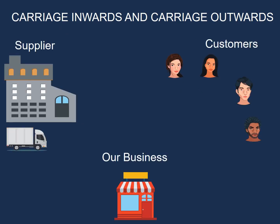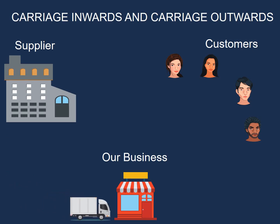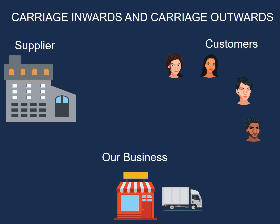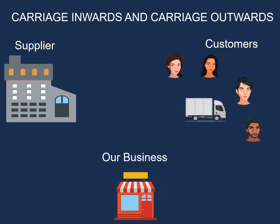We have our supplier, we have our business, and then we have our customers. When goods are being transported from our supplier to the business, that means goods are coming into our business, so this will be carriage inwards. But when we move goods from our business to our customers, the goods are going out of the business, so it will be carriage outwards. Carriage inwards can be linked to purchases and carriage outwards can be linked to sales.